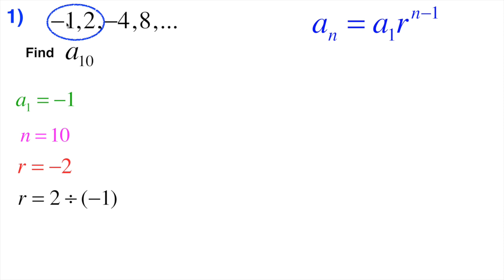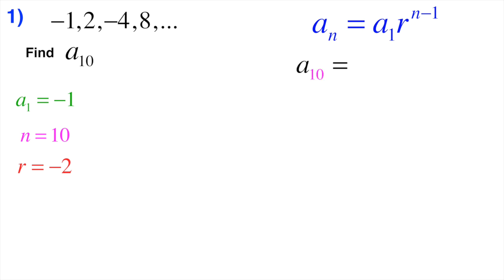That tells us it's a geometric sequence — we're multiplying by a common factor of negative 2. Negative 1 times negative 2 gives 2, times negative 2 gives negative 4, times negative 2 gives 8, and so on. Now we can fill in the formula: we're looking for A sub 10, A sub 1 is negative 1, the ratio r is negative 2, and n is 10, so the exponent is 10 minus 1.